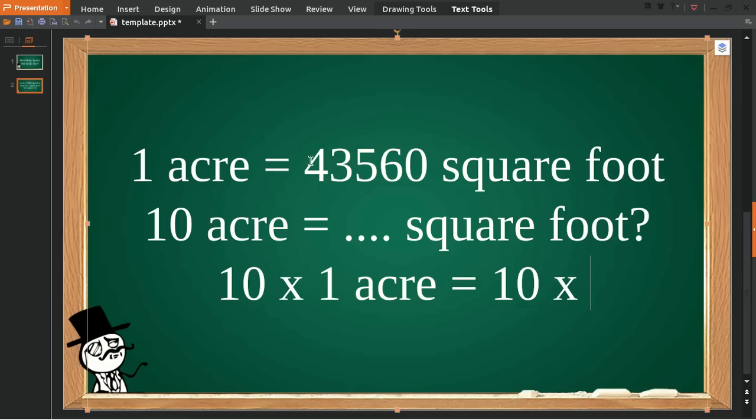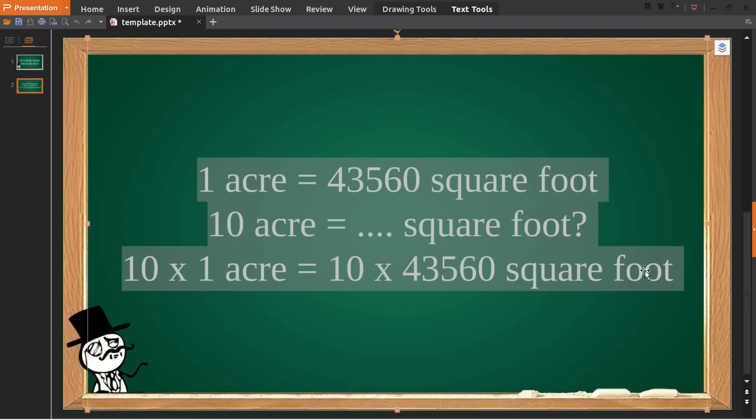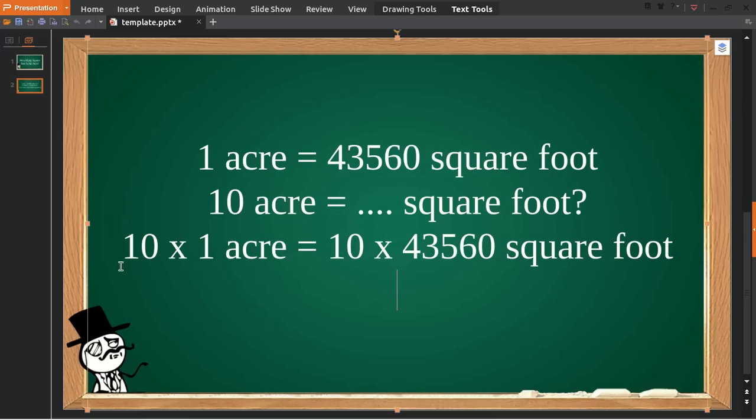You multiply 10 with this number. Now, 10 multiplied by 1 is equal to 10 acres. Then give an equal sign, and 10 multiplied by 43,560 is equal to 435,600 square feet.